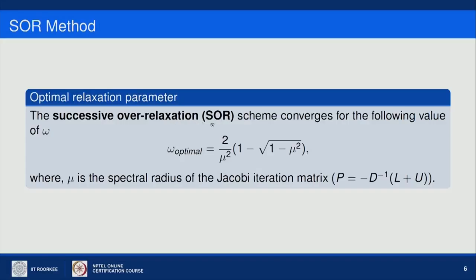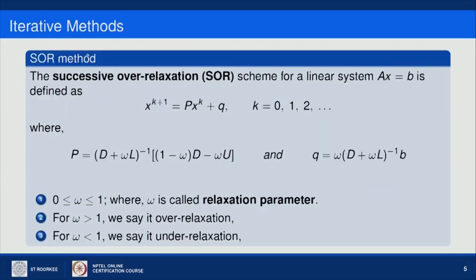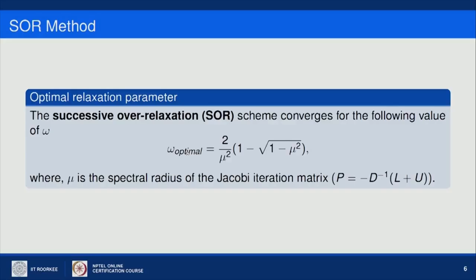The successive over-relaxation scheme converges for an optimal value of omega. For the convergence of this scheme, we need to find the optimal omega, which is given by 2 / (1 + sqrt(1 − μ²)), where μ is the spectral radius of the Jacobi iteration matrix. The Jacobi iteration matrix is −D^{−1}(L + U).